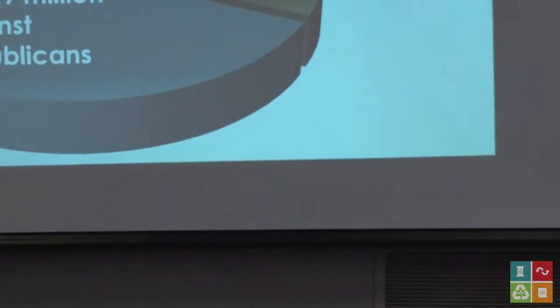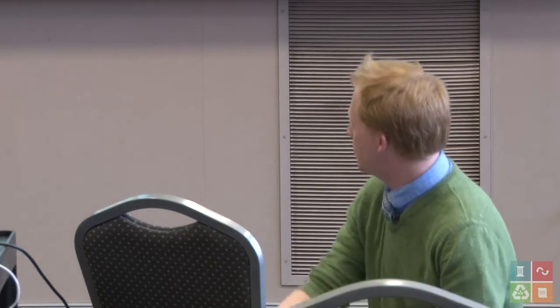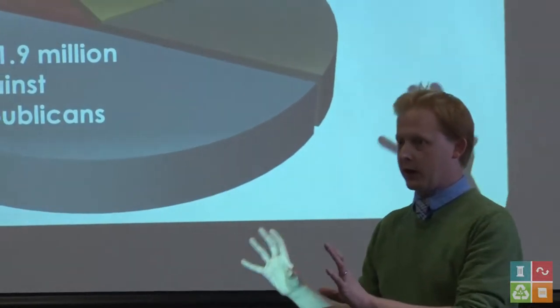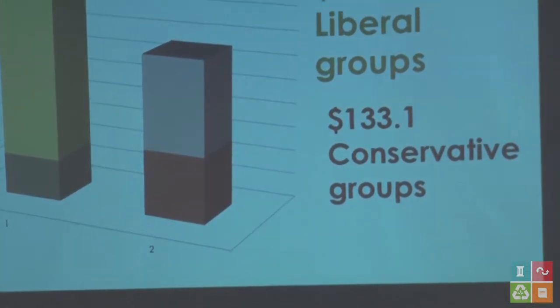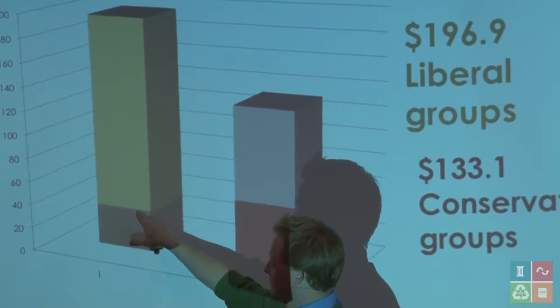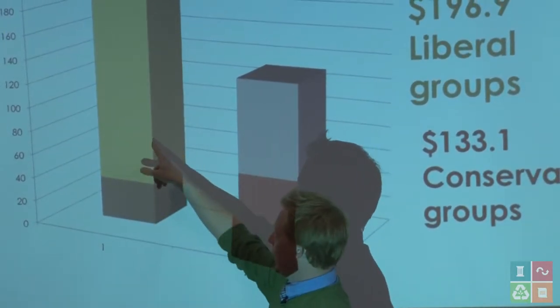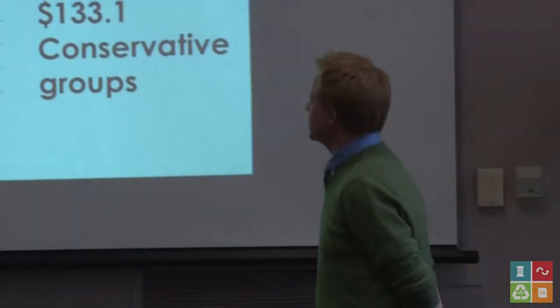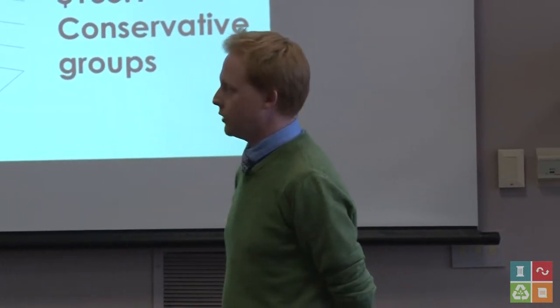Looking at the chart: $161.9 million from super PACs that spent money criticizing Republicans; $35 million from super PACs supporting Democrats; $78 million against Democrats; and $55.1 million for Republicans from super PACs. Breaking it down by partisanship, the Democrats were beating the Republicans in super PAC spending at least this year — $196.9 million on the Democrat side and $133.1 million on the Republican side.